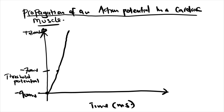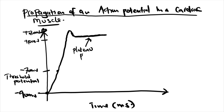At positive 20 millivolts, potassium channels open and the membrane potential starts going down. When it reaches positive 10 millivolts, calcium stored in the sarcoplasmic reticulum of the cardiac muscle is released. This calcium release balances the membrane potential, creating what we call a plateau phase. When calcium stops being released, potassium channels open and repolarization occurs.